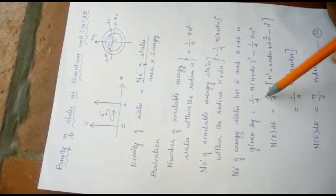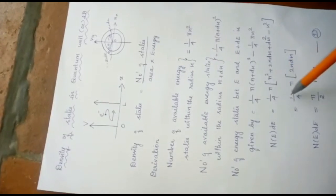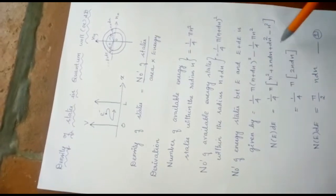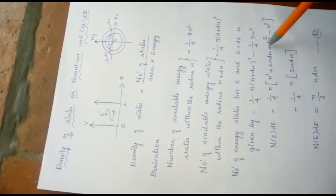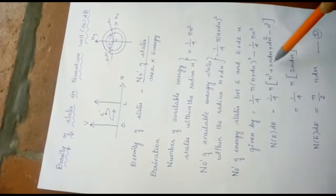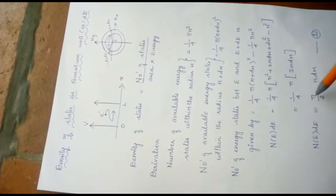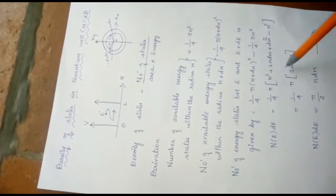Here we are taking 1 by 4 pi as a common term. So, 1 by 4 pi within the bracket, n square and n square getting cancelled. We are neglecting the dn square value, then we are getting 2n dn only. So, the result is pi by 2 n into dn.